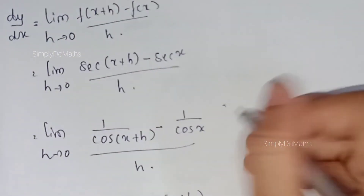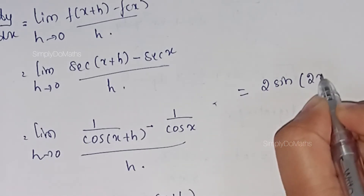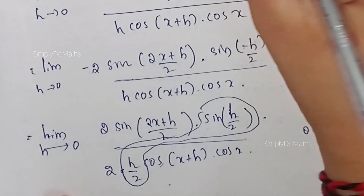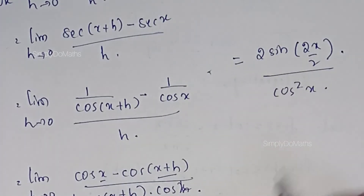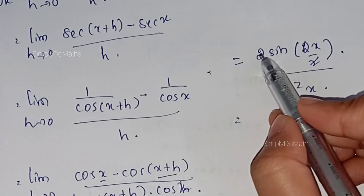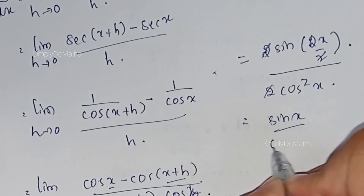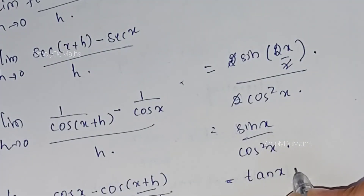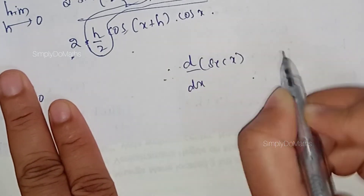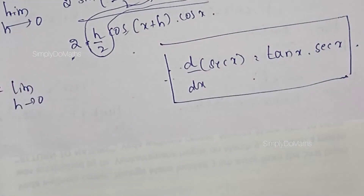Applying the limit, h tending to 0 makes 2x plus h become 2x, so sin of 2x by 2 equals sin x. The 2's cancel, and cos of x plus h becomes cos x, giving cos squared x in the denominator. We are left with sin x divided by cos squared x, which is sin x by cos x times 1 by cos x, equal to tan x times secant x. Therefore, d by dx of secant x equals tan x times secant x.